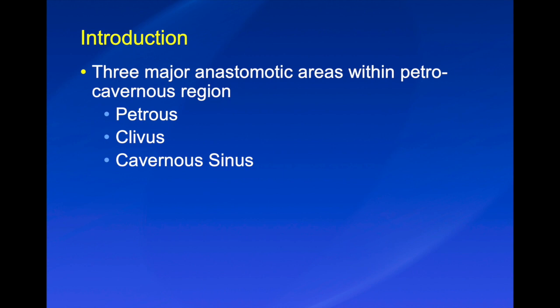There are three major anastomotic areas within the petrocavernous region. Number one, the petrous ICA and associated petrous branches. Number two, the clival branches. And number three, the cavernous sinus.